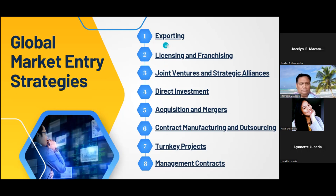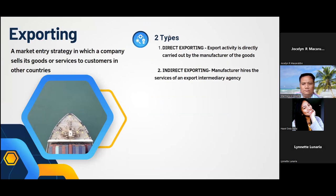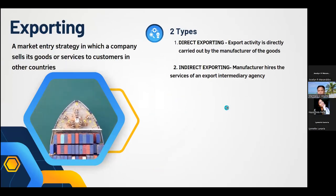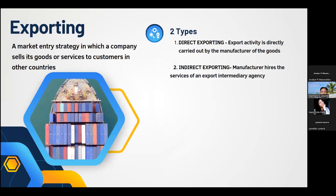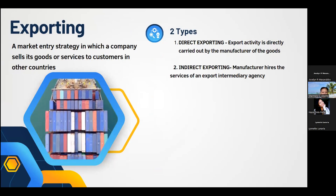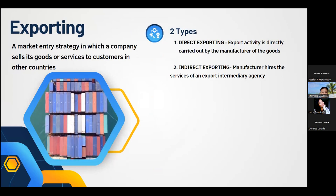First, let's start with exporting. Exporting is a market entry strategy in which a company sells its goods or services to customers in other countries, entailing shipping goods or providing services over international borders, frequently with the help of intermediaries or distributors. It can be of two types: direct exporting, where the export activity is directly carried out by the manufacturer, and indirect exporting, where the manufacturer hires the services of an export intermediary agency to export goods.